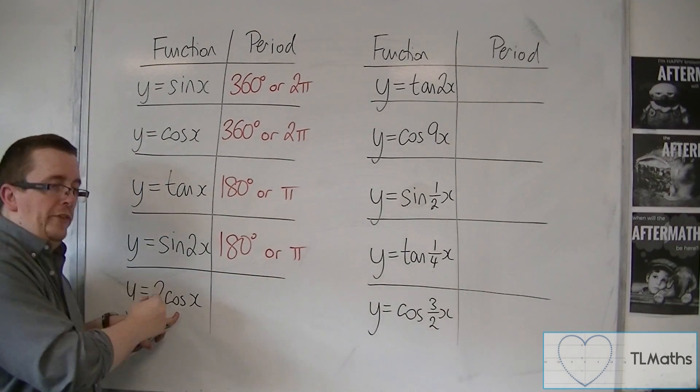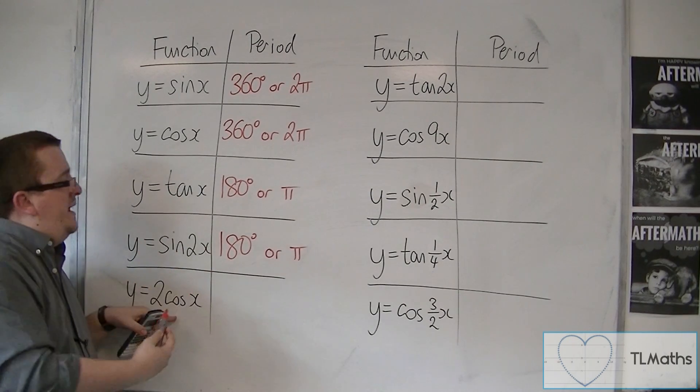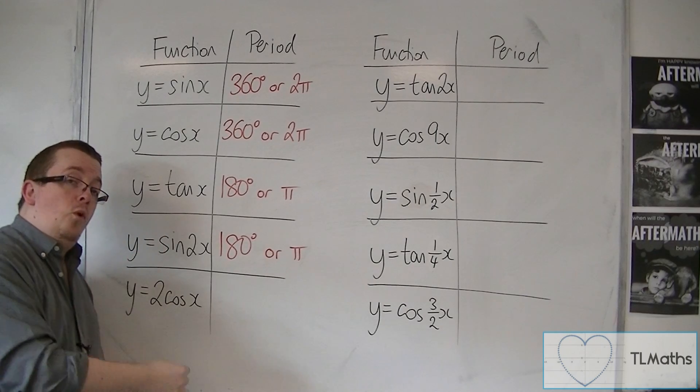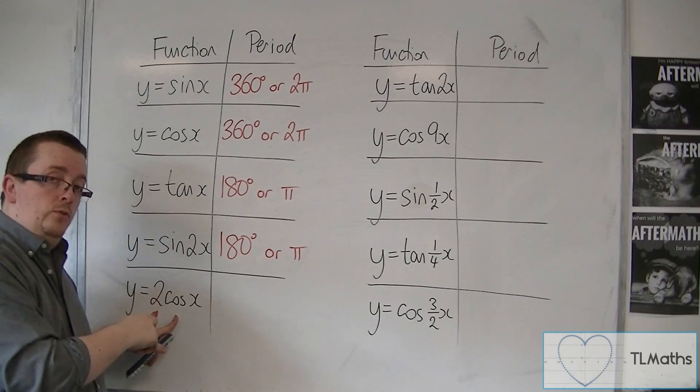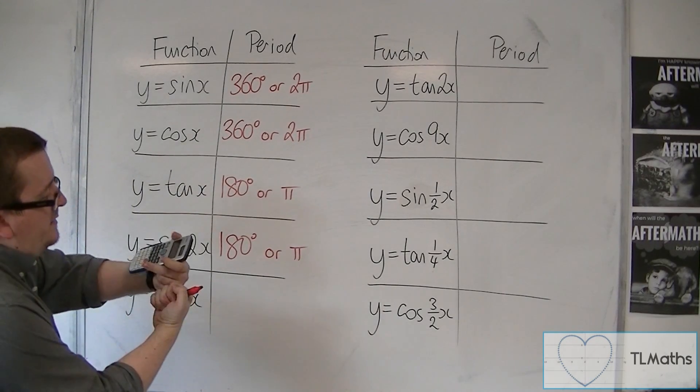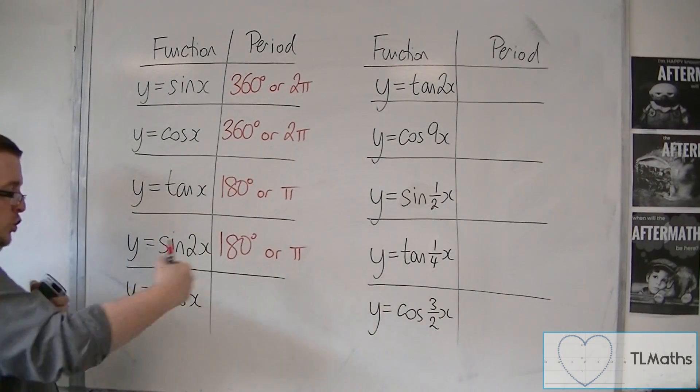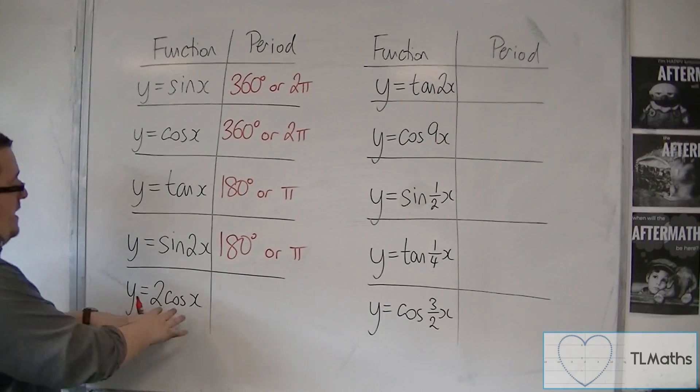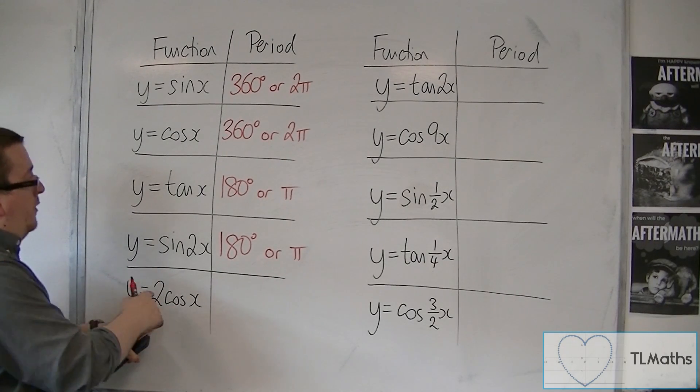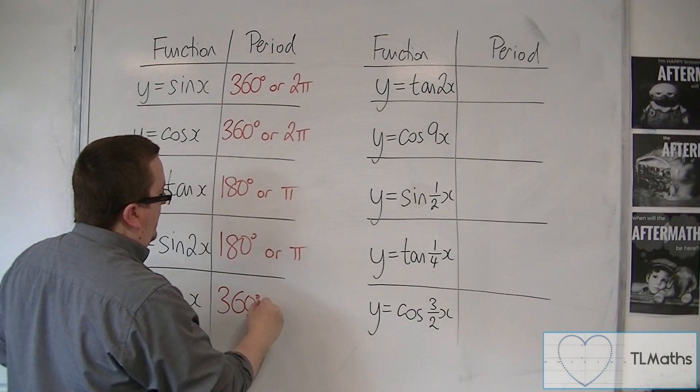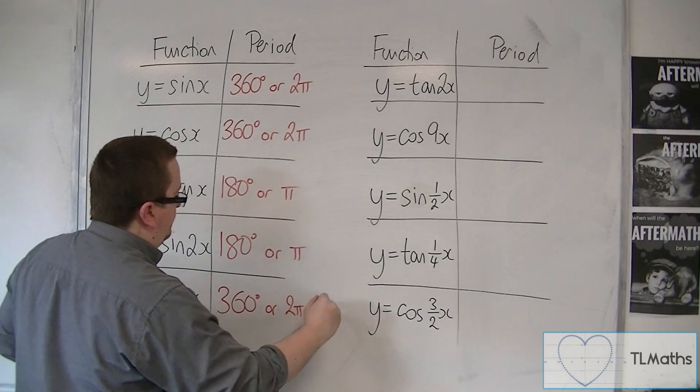Now for y is equal to 2 cos x, this is a bit of a red herring that I've thrown in here, because that is a stretch parallel to the y-axis factor 2. And all that does is stretch the curve that way. It doesn't extend the curve out or shorten it. And so this doesn't change the period whatsoever. And so that remains at 360 or 2 pi.